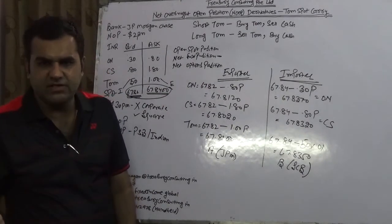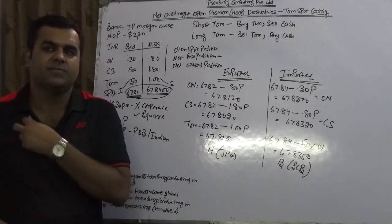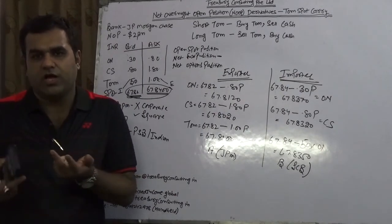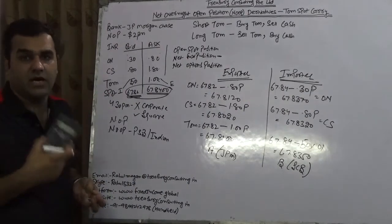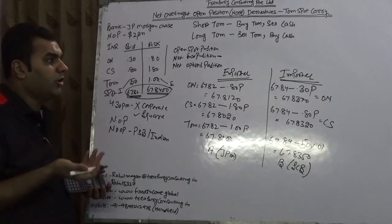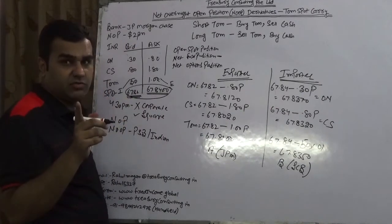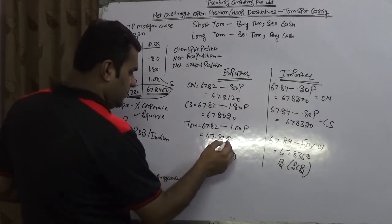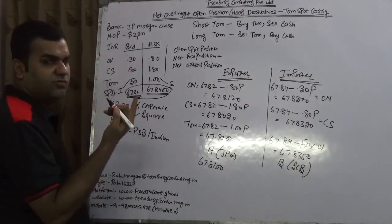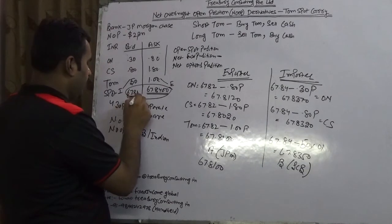Trader A is of the view that today it is 67.82. The Trump-Kim summit has been cancelled. Congress is before Trump as usual and Trump has not been able to justify why he cancelled it except a diplomatic answer that me and my team was not ready for that. He thinks that Indian rupee will get down. So I would be long tom, so I would be selling Tom. You would be selling the Tom which is 67.81 and you would be buying the cash which is spot 67.84.